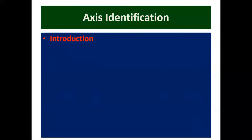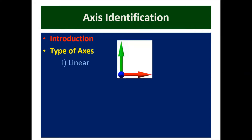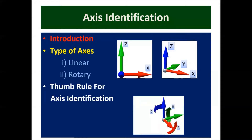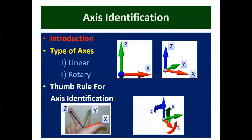Hello friends, today we are going to see the axis identification which is used in the CNC lathe machine as well as the VMC machine. The first part will cover the introduction, the second part covers types of axes — linear axis as well as rotary axis — and the third part will cover thumb rules for axis identification.